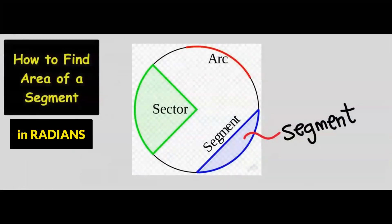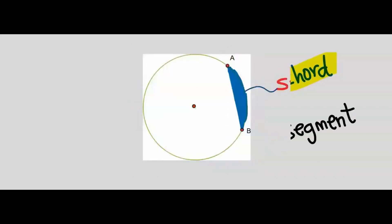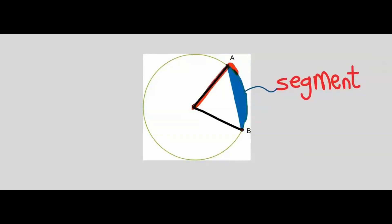Let's consider how to find the area of a segment. This line is known as a chord and the shaded portion is known as a segment. Usually within a circle, a segment is inside a sector.